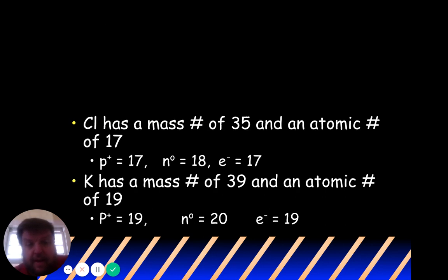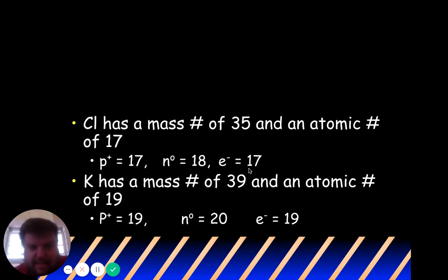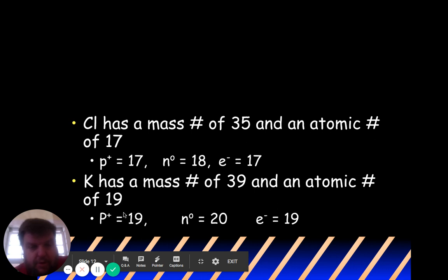Chlorine has a mass of 35 and atomic number 17. The protons equal the atomic number, and the electrons equal the protons. But look at the neutrons — it's 18, not 17. Don't get tricked: mass number 35 minus 17 equals 18 neutrons. Similarly, potassium has a mass number of 39 and an atomic number of 19. 39 minus 19 is 20. So protons: 19, electrons: 19, but neutrons: 20.